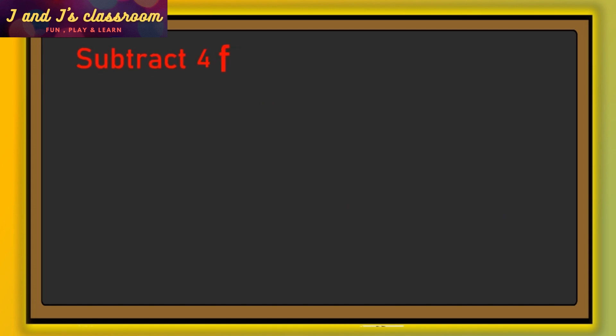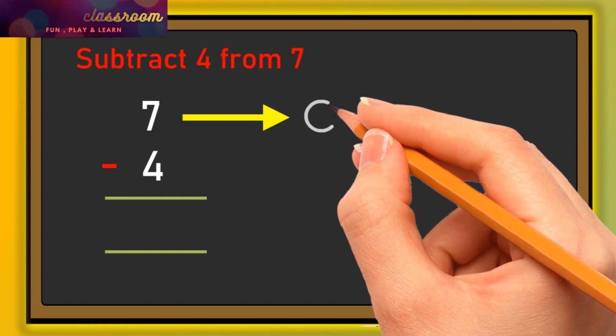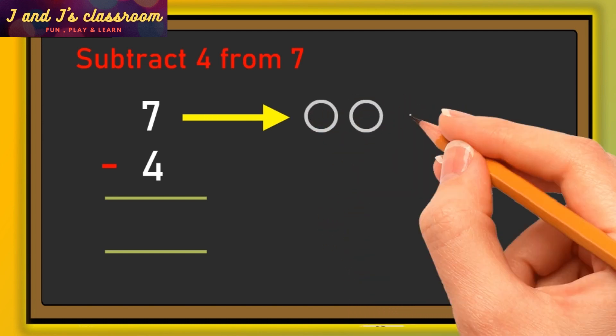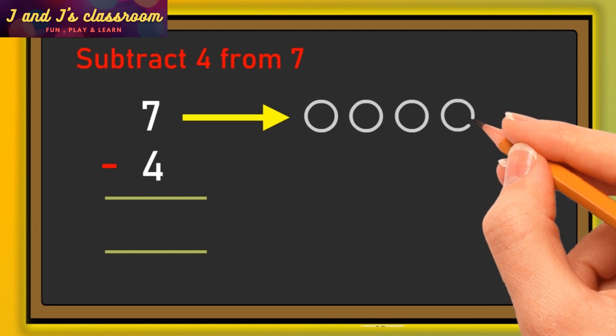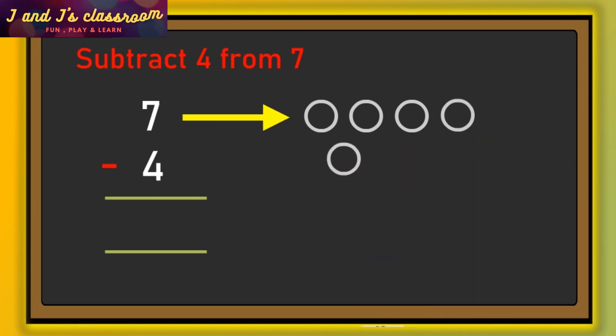Next, we are going to subtract four from seven. The big number is seven, so write that first, then write the second number four. Let's start the subtraction. The first number is seven, so draw seven circles: one, two, three, four, five, six, seven.